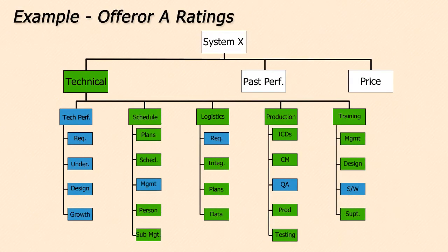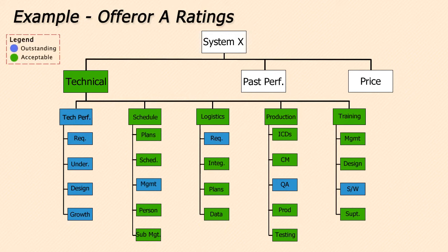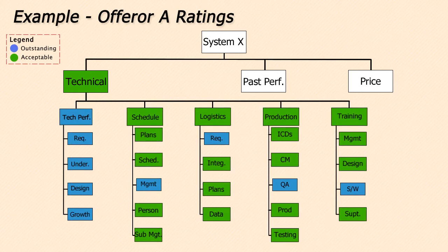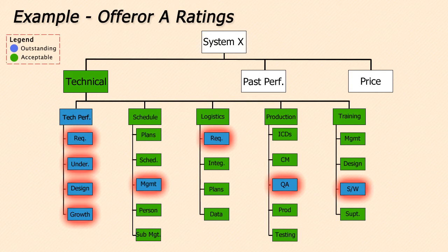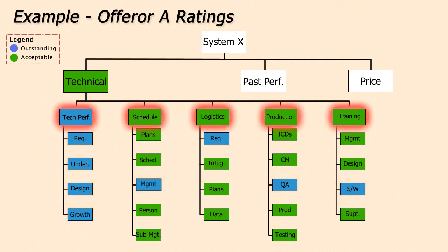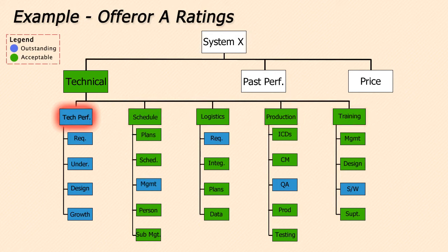Suppose this is what the evaluation results look like for one offeror in the technical factor. Assume the blue represents an outstanding rating, and the green represents an acceptable rating. Notice that out of 22 elements being evaluated, eight are rated outstanding. And notice also that, although there are outstanding elements under every sub-factor, when the ratings are rolled up to the sub-factor level, there is only one sub-factor that is rated as outstanding. Now notice that when the five sub-factors are rolled up to a factor rating, it is only acceptable.